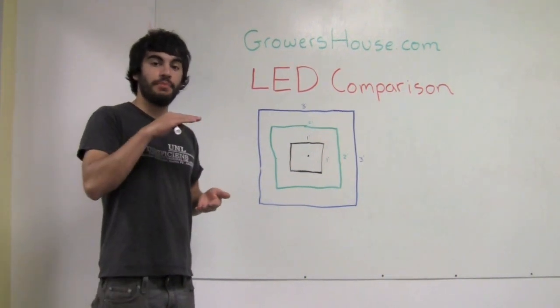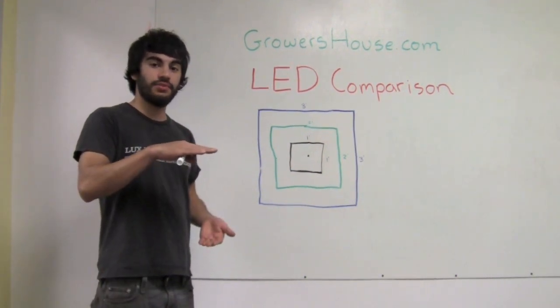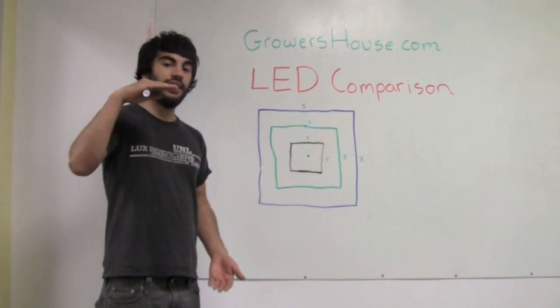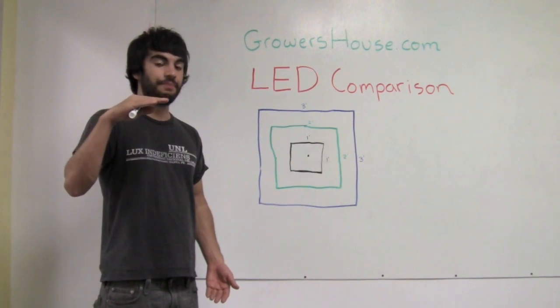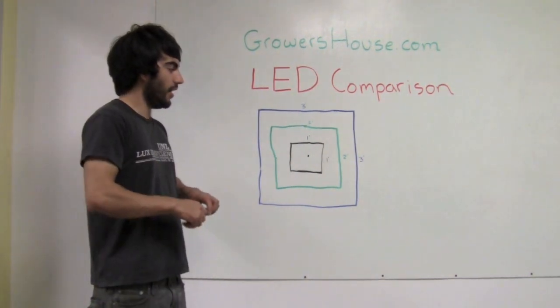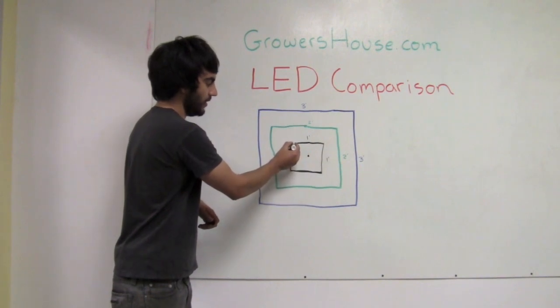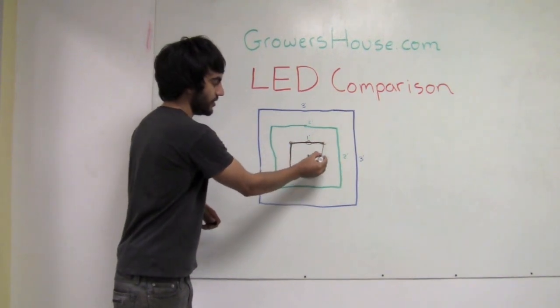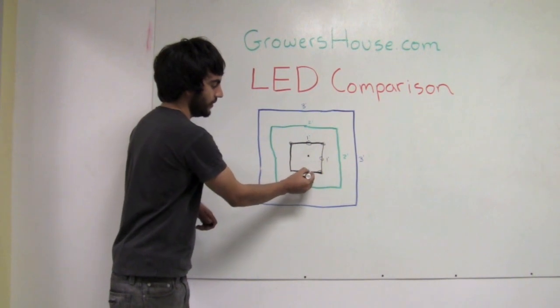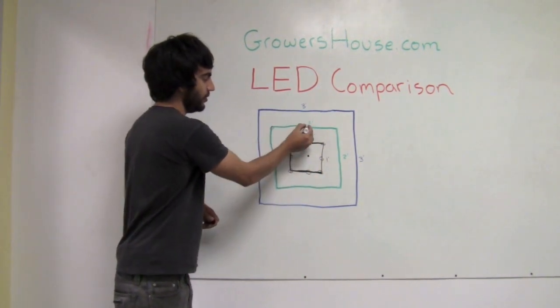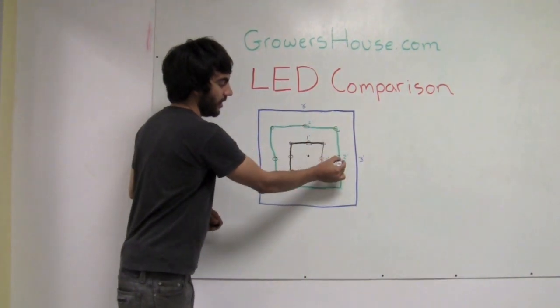So we measured the PAR readings at 12 inches when the lights were 12 inches above the footprint, 18 inches above the footprint, and 24 inches above the footprint. When we took our readings we took them here in the center and then we took them at these different points on every single square, which ended up giving us quite a few readings that you can see in the infographic.